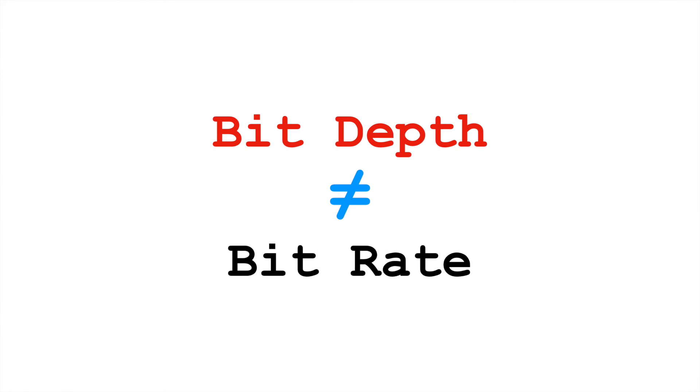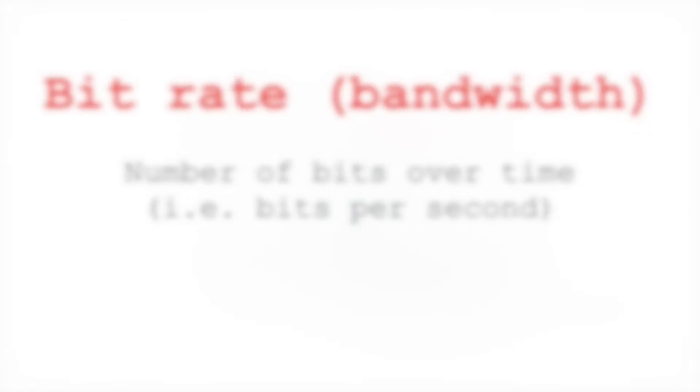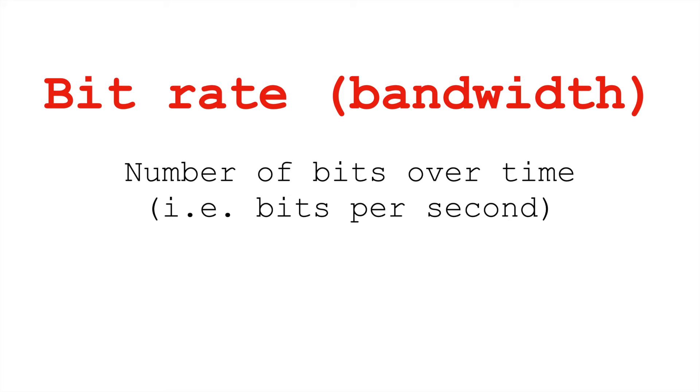Let's come back to bit rate. Again, bit depth is another word for resolution, but bit rate has the word rate in it. So it's going to be the number of bits over time. We can also call this bandwidth. So if we're talking about the amount of data over time, we need to take our bit depth, the number of bits we're using to represent a sample, and then how many samples per second.